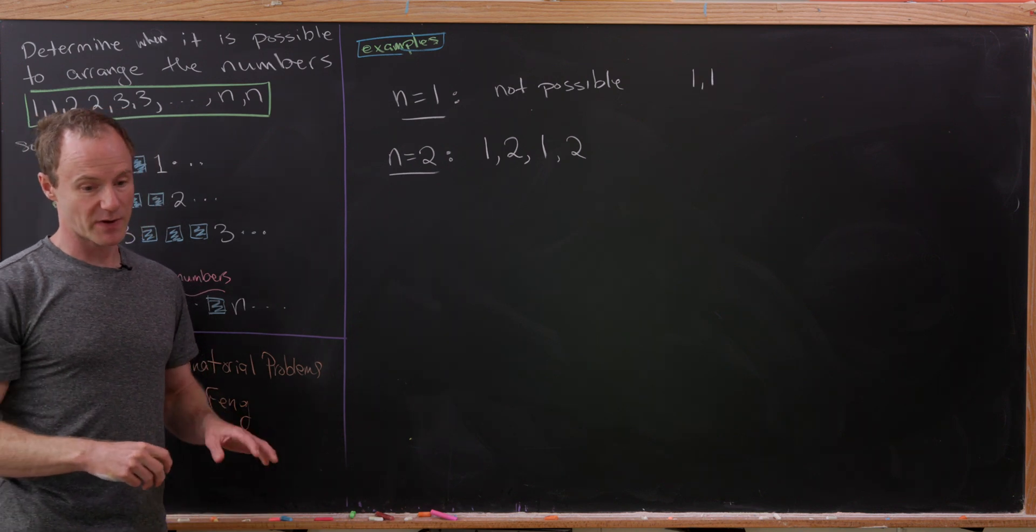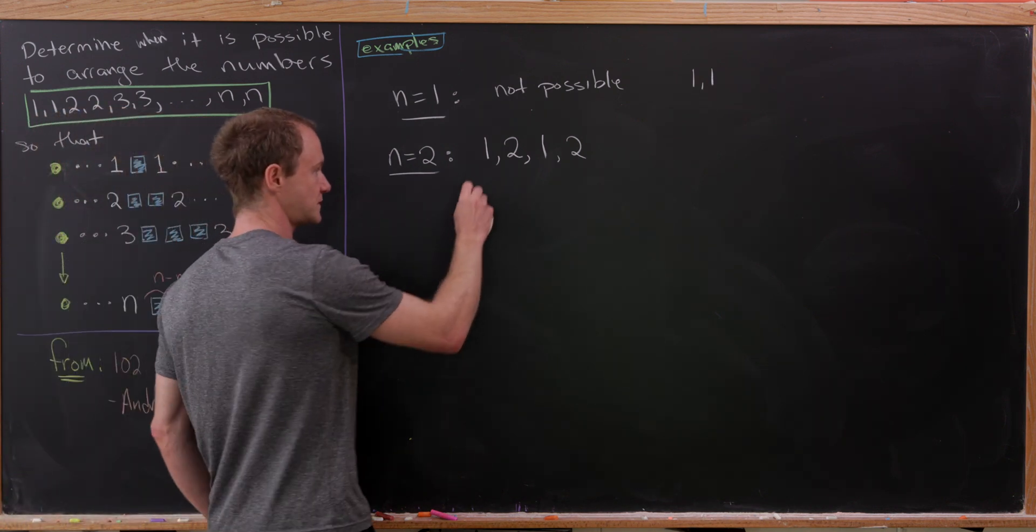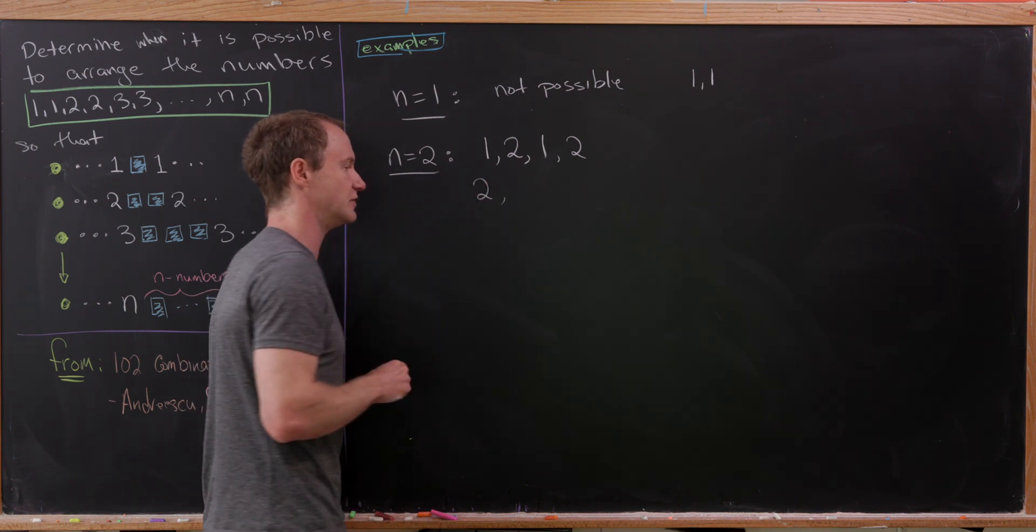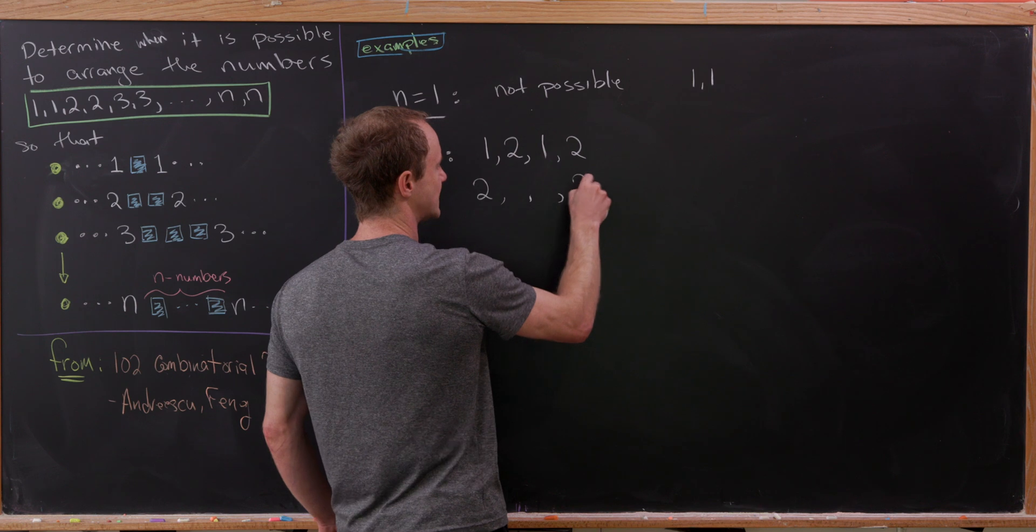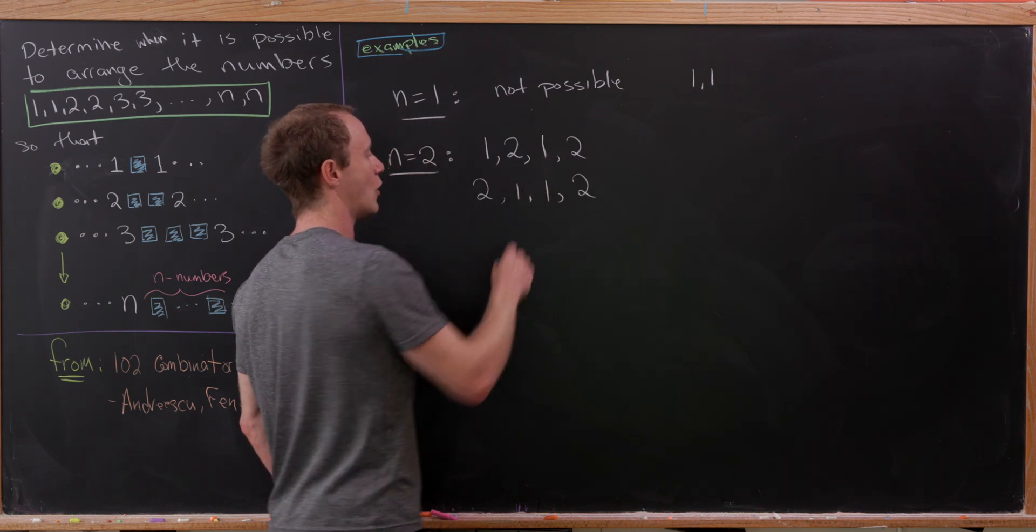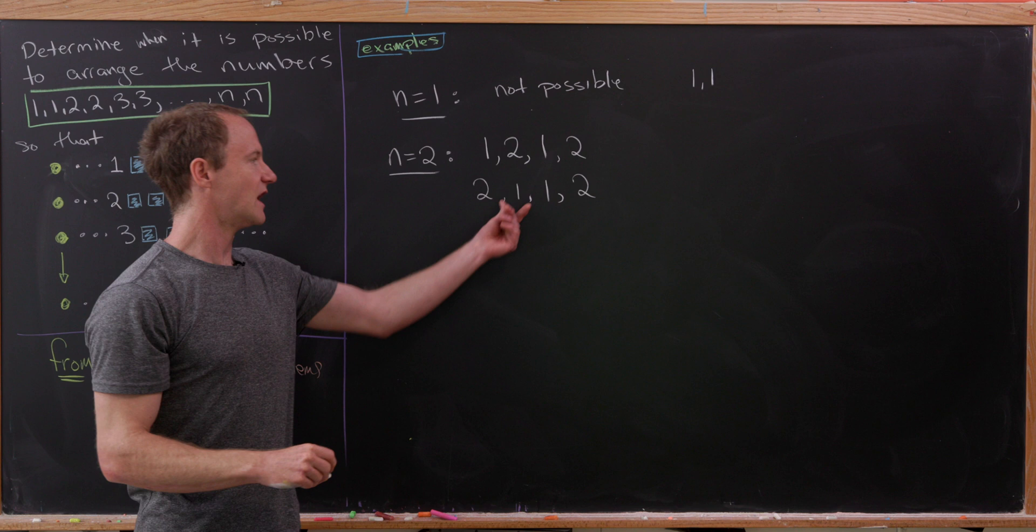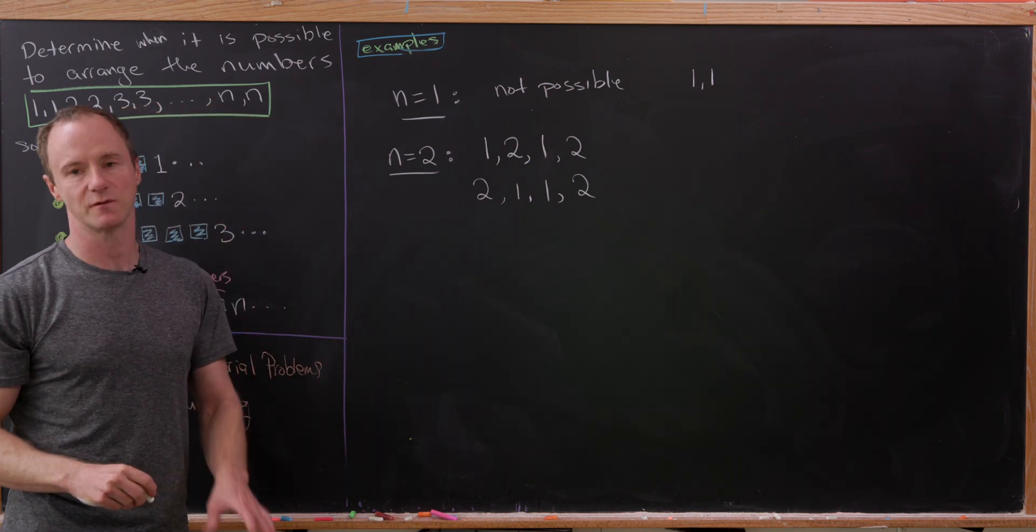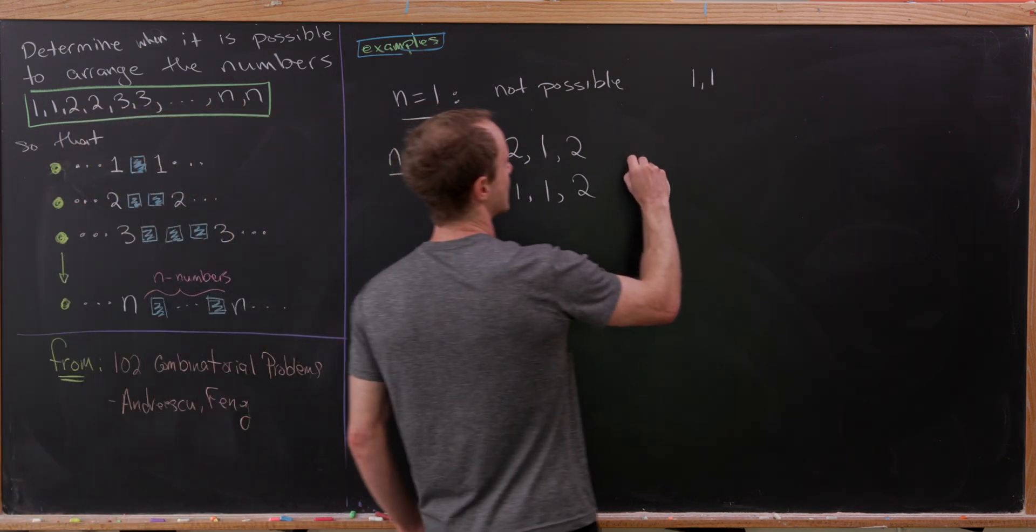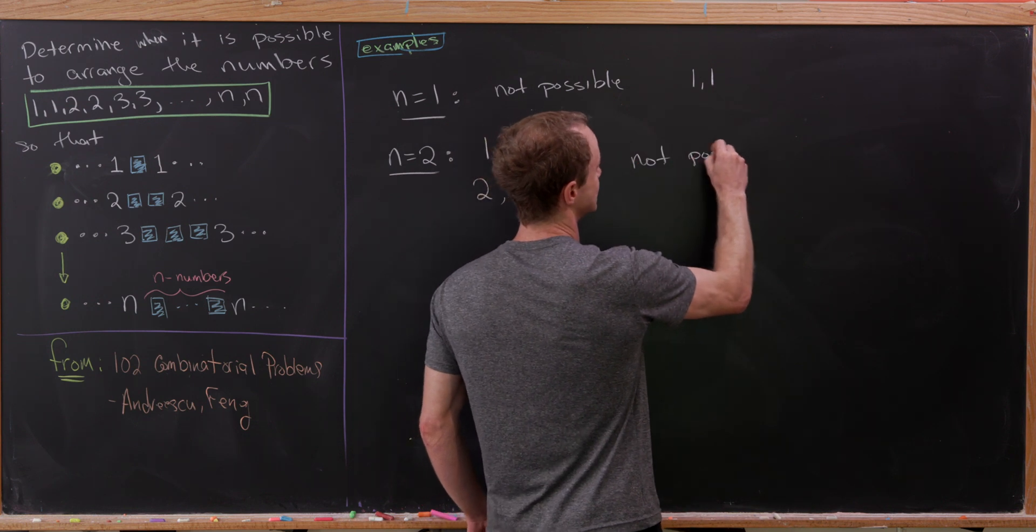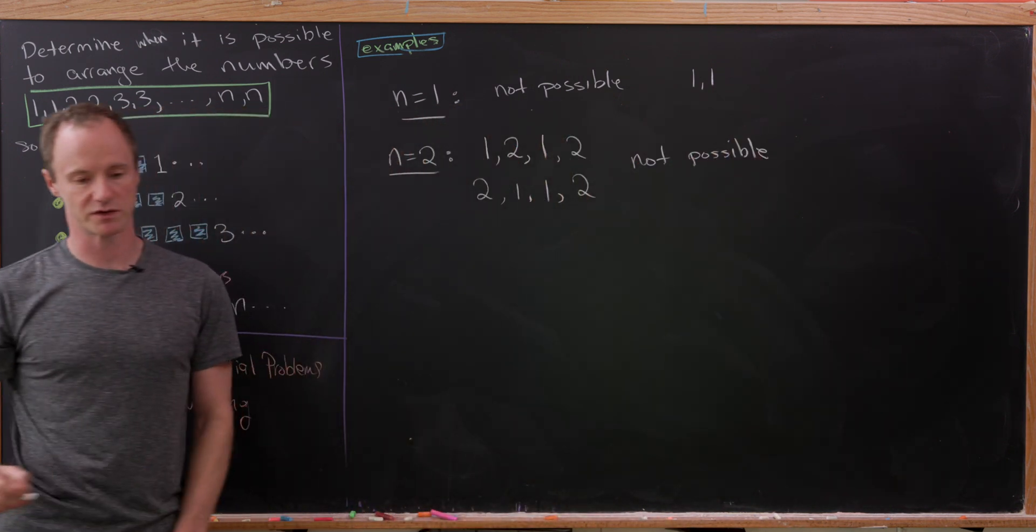The only other possibility is to start with the number 2. If we start with 2, there must be two numbers between 2 and itself, but we can only use 1 and 1 there. But that means there's nothing between these two appearances of 1.